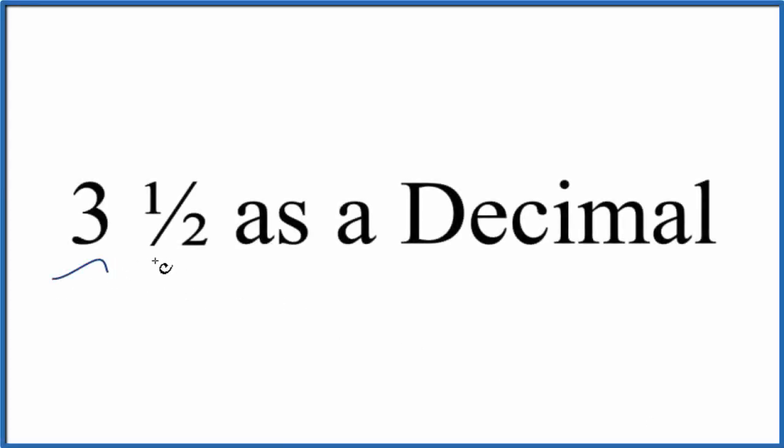Let's convert 3 and 1 half to a decimal, and there's a few ways we could do this. First, we could get this to be an improper fraction.